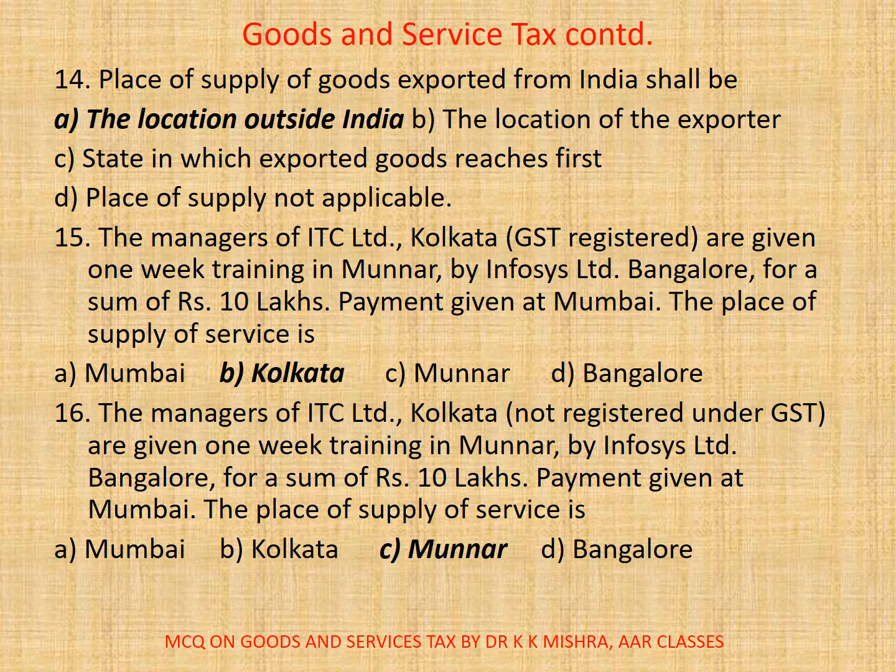Question 16: The managers of ITC Limited, Kolkata, not registered under GST, are given one big training in Munnar by Infosys Limited Bangalore for a sum of rupees 10 lakhs. Payment given at Mumbai. The place of supply of service is — A. Mumbai, B. Kolkata, C. Munnar, D. Bangalore. Correct option is C: Munnar.